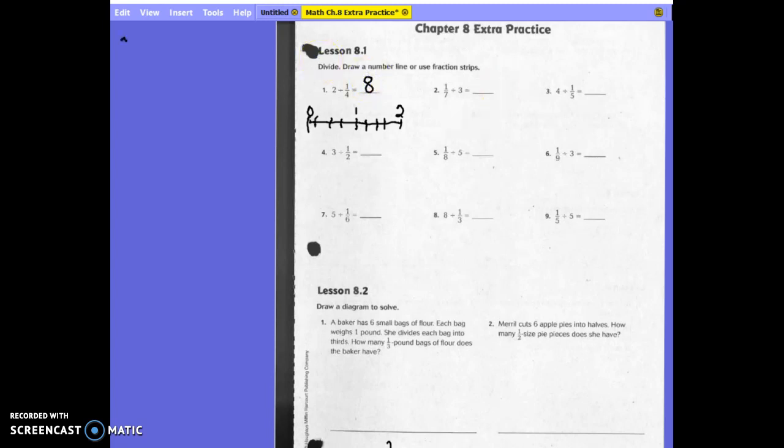On number 2 we have a fraction that we're dividing. So I have 1 whole. I'm going to divide that into 7 pieces. I'm going to divide each of those pieces, each of those sevenths, into 3 parts.